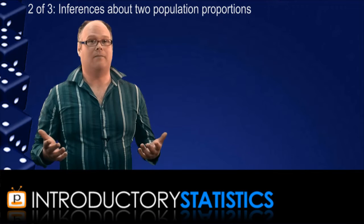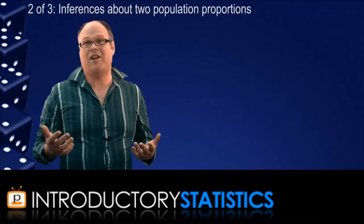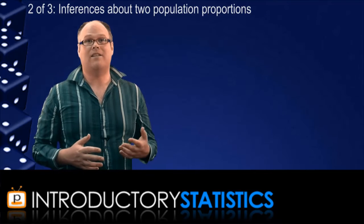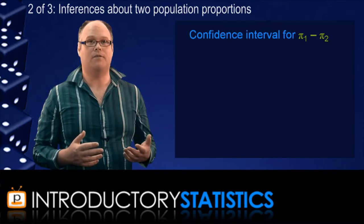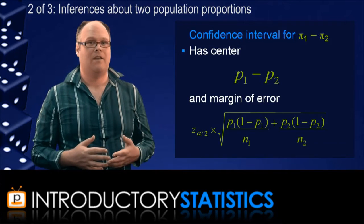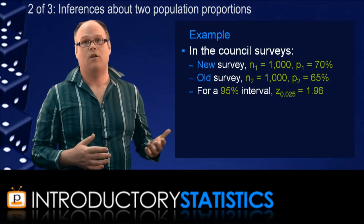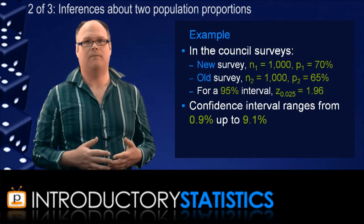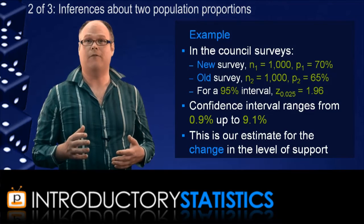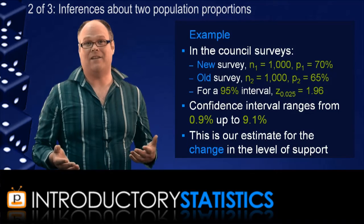The hard work is now done. Just as with one parameter, knowing about the sampling distribution tells you everything you need to know about any confidence interval or hypothesis test. For example, the confidence interval for pi1 minus pi2 will have a centre of p1 minus p2 and a margin of error given by the formula. Here are the numbers for the council surveys, and if we want to construct the 95% confidence interval, we can show that it's 0.9% up to 9.1%. That is, we're 95% confident that the level of support for the bridge has improved by somewhere between 0.9 and 9.1%.